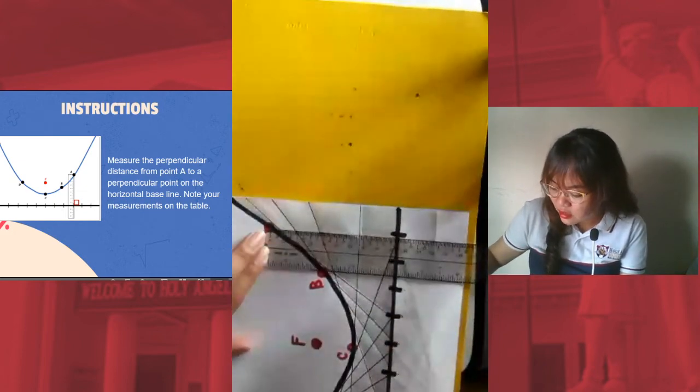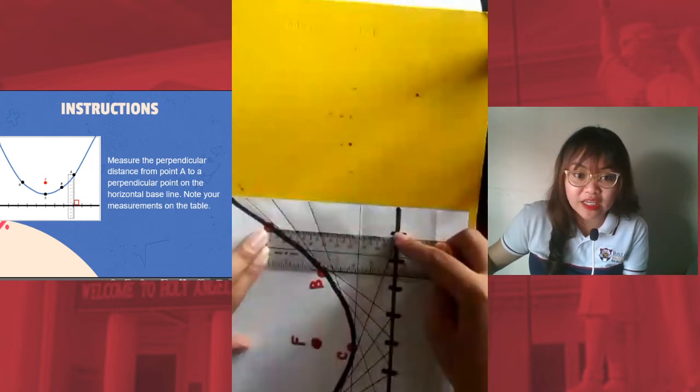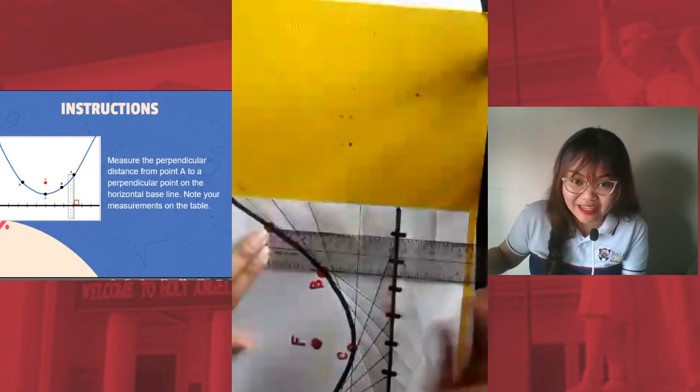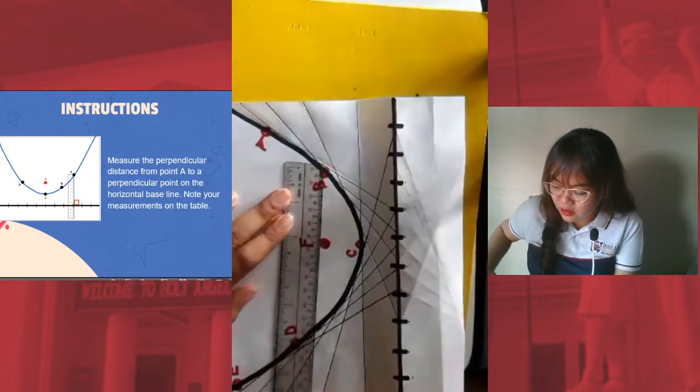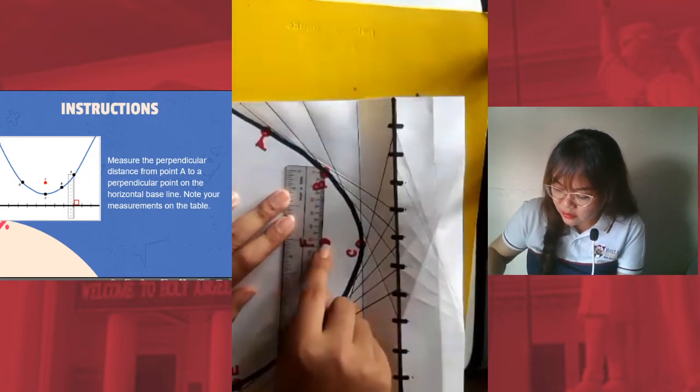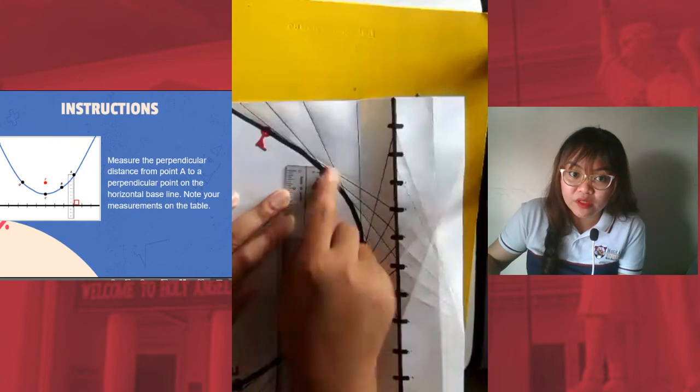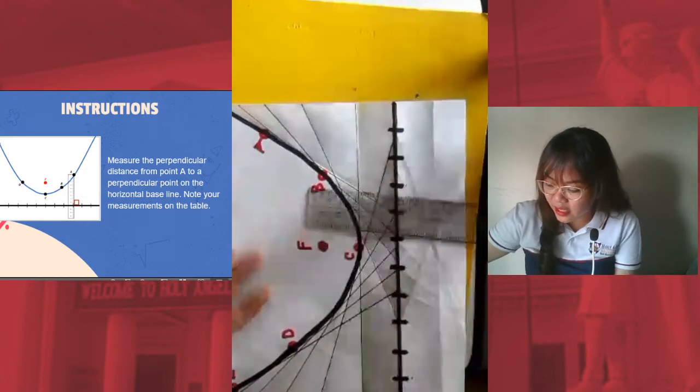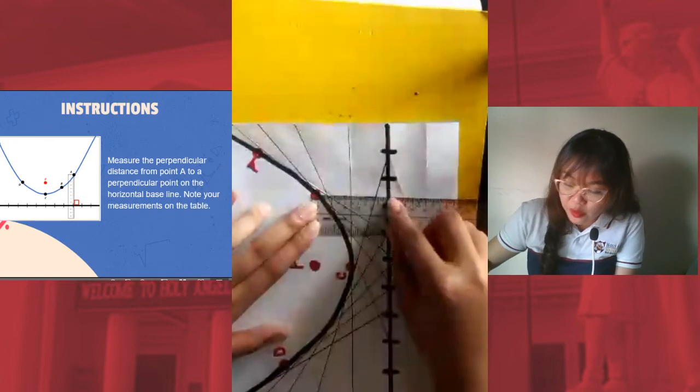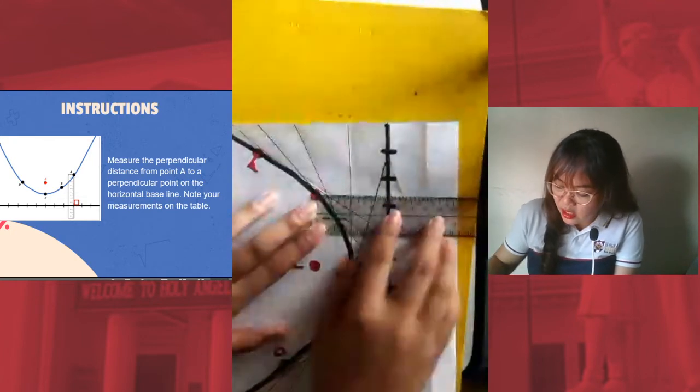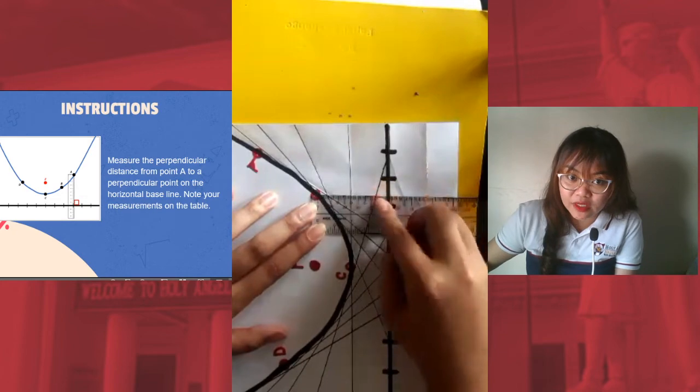It's not necessarily on the markings, not necessarily placed there. Let's say I will measure B. So from F to B, we'll have this measurement, F to B. And then from B to the line, B to the line, as long as it's perpendicular. Right angle here. Okay.